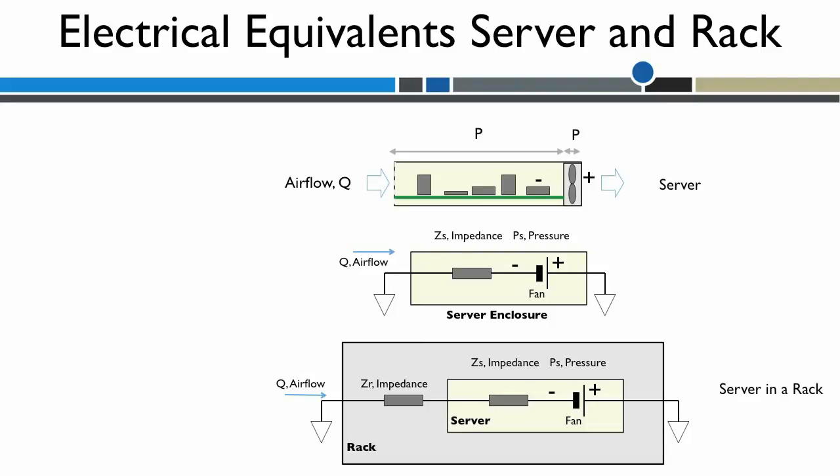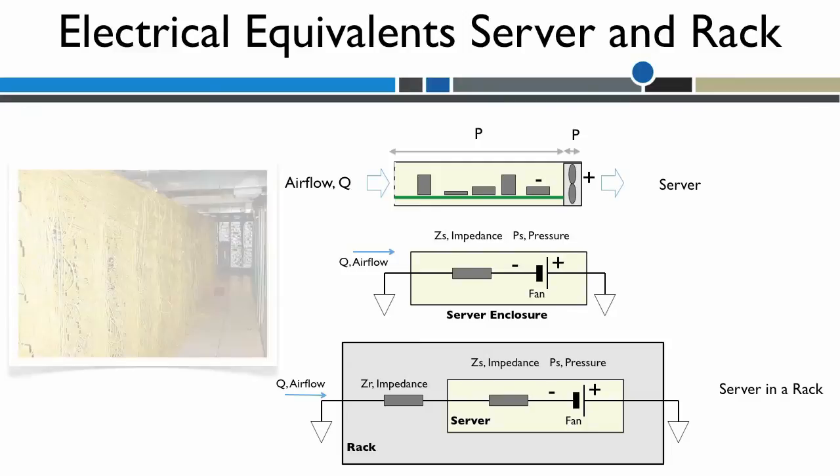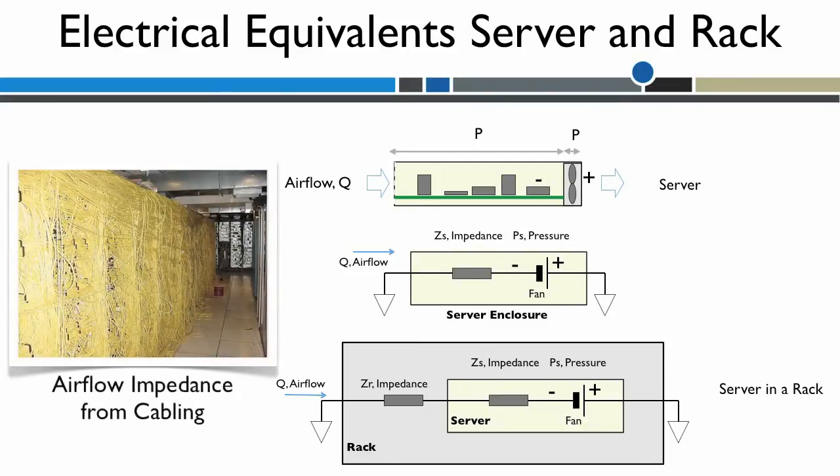Now, when the server is placed in a rack, there is additional impedance due to the front door, cable assemblies, and other structures such as rear door heat exchangers.